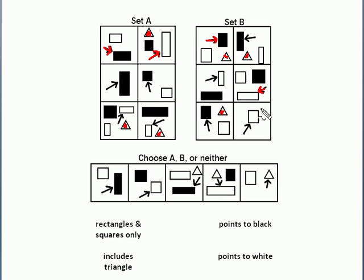So we want to know what the simple rules are, and let's think about whether we've got a triangle or not. That could be a simple rule, includes triangle or is rectangles or squares only. And then in terms of where the arrow is pointing to, it could point to black or it could point to white. That can be our second rule.